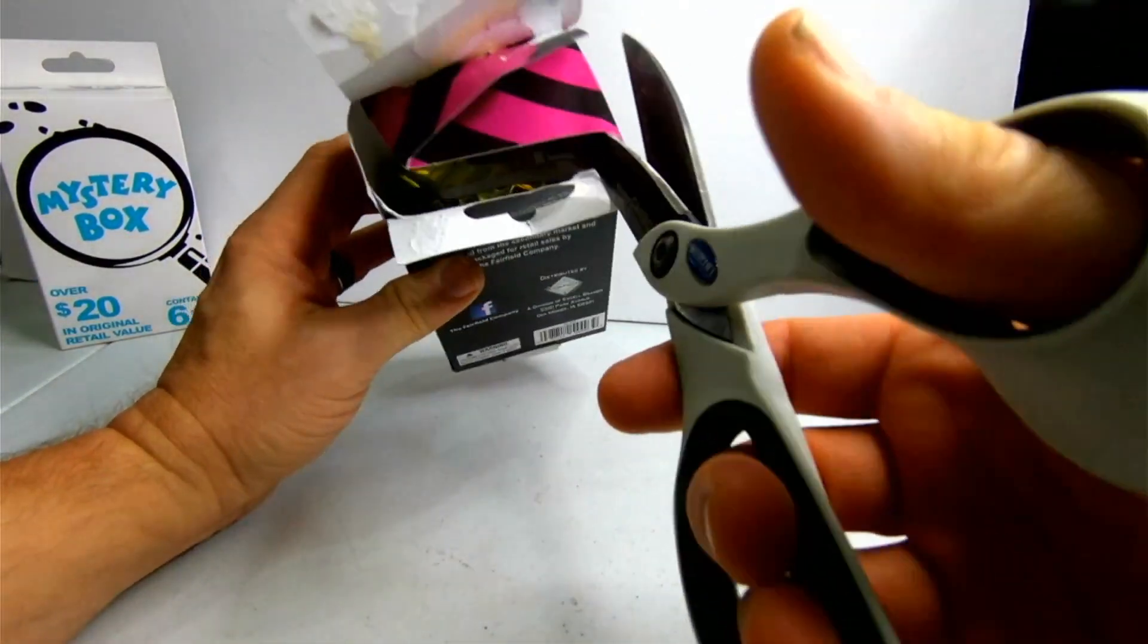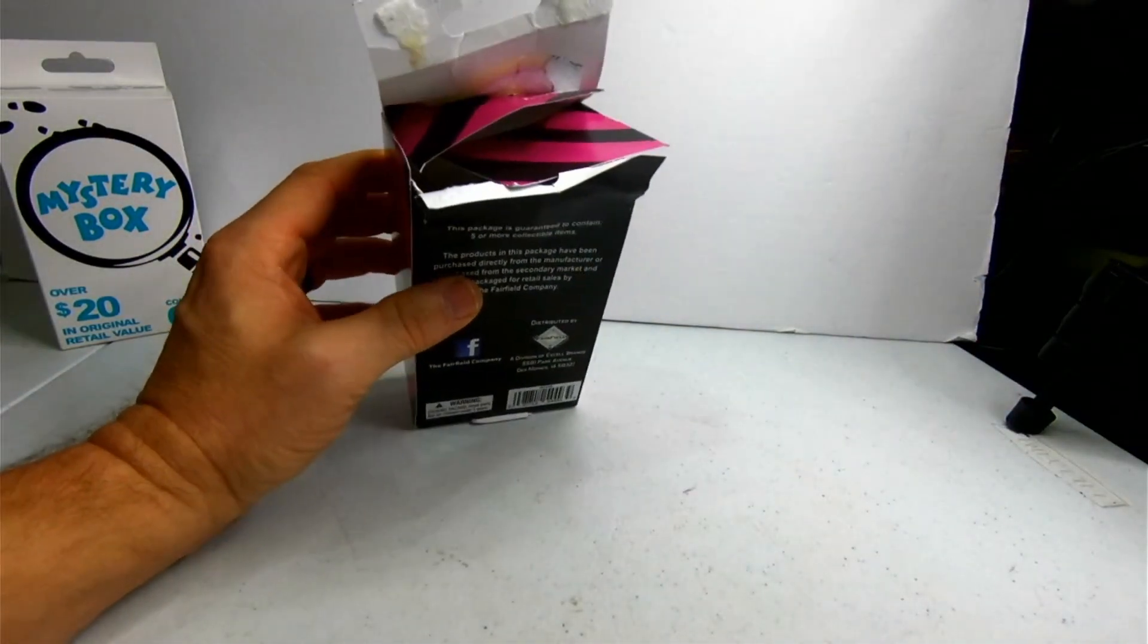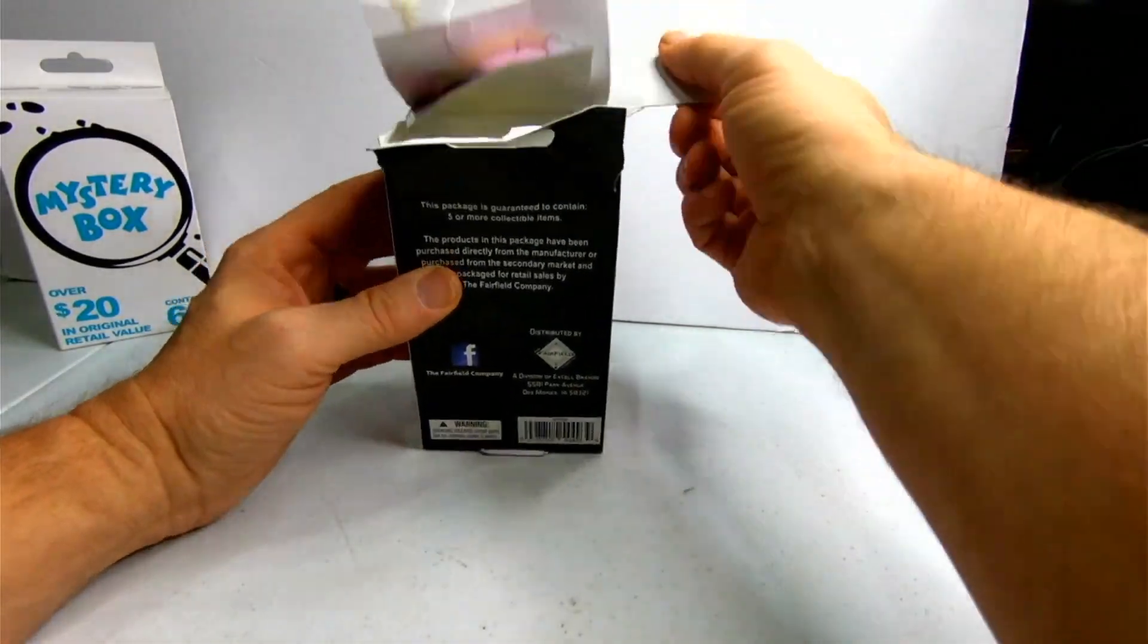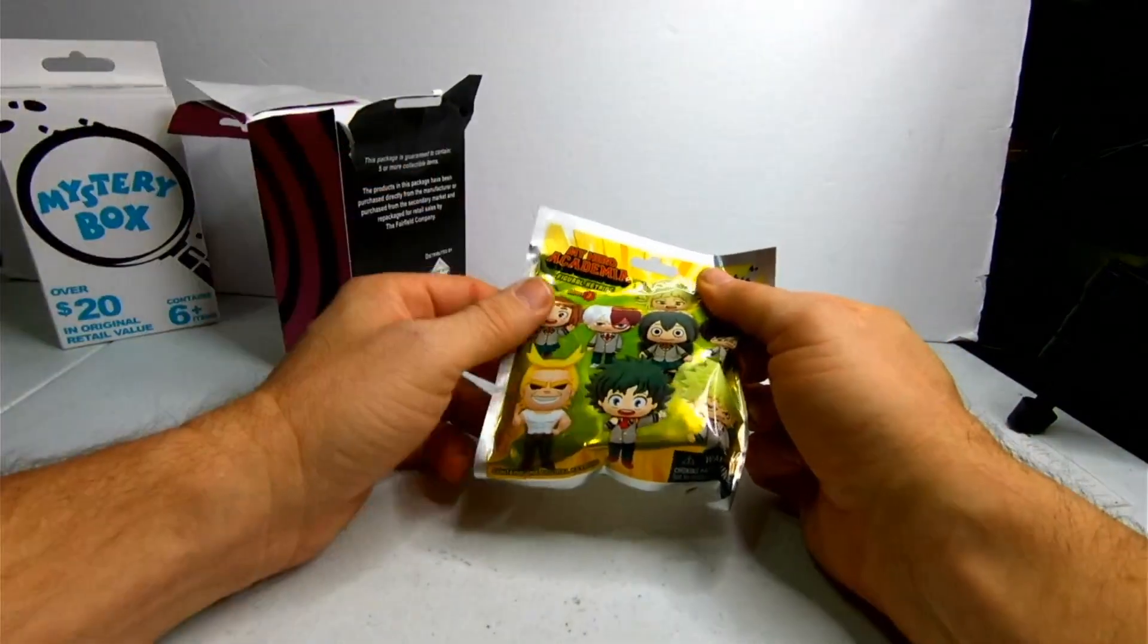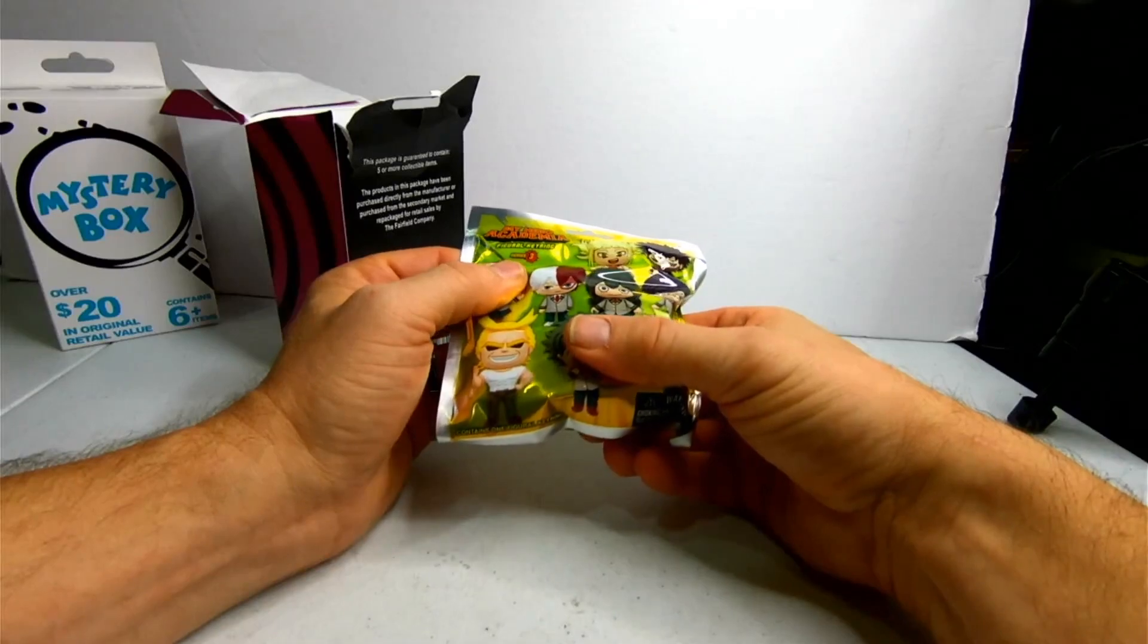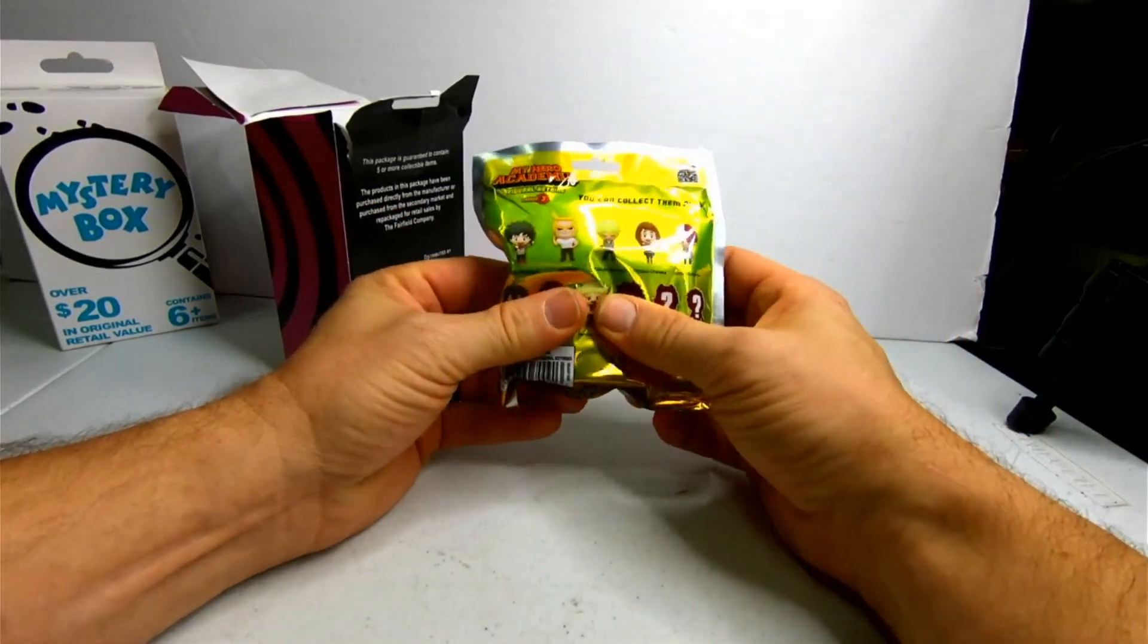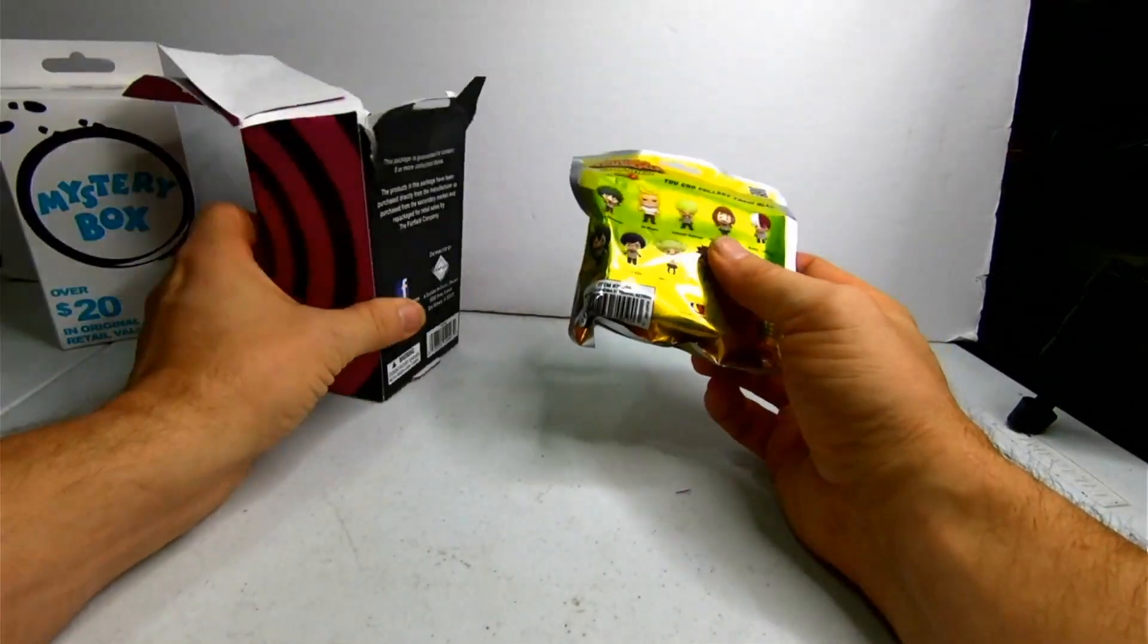Alright. I haven't seen obviously what's inside of these. So, first of all, I see a bag in there. I'm going to pull that out. This is My Hero Academia. It is a Figaro Key Ring Series 3. I have no idea what that is. You can collect them all. This is the one that didn't make a claim.